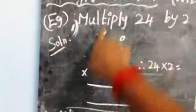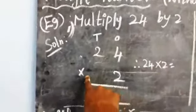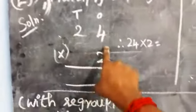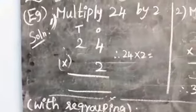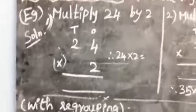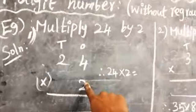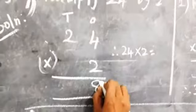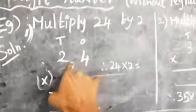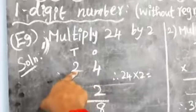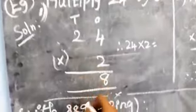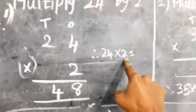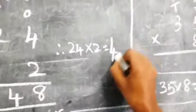We have the ones place and the tens place. Multiplication is simple — do you know your tables? I hope you have studied the tables. Two fours are eight, so eight will be written in the ones place. Then we multiply the tens place: two twos are four. So twenty-four into two equals forty-eight.